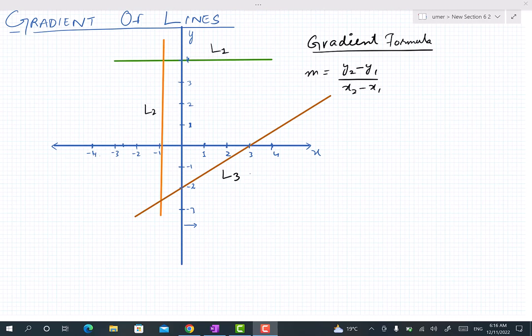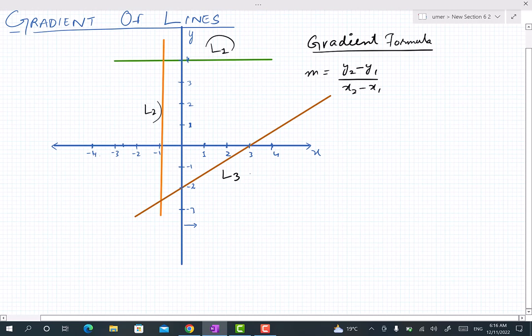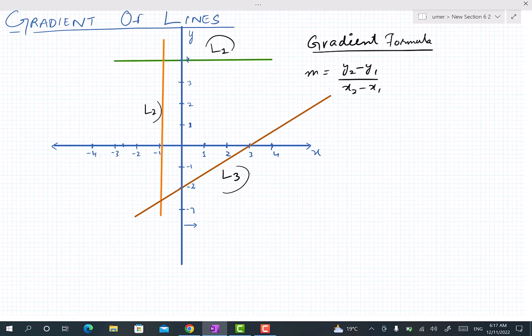This video is about gradient of lines, how we calculate the gradient of a line if it is given in a graph. We have three different lines as shown on the screen: line L1, L2, and L3. These three lines are in different directions, and first we will be talking about what gradient is.